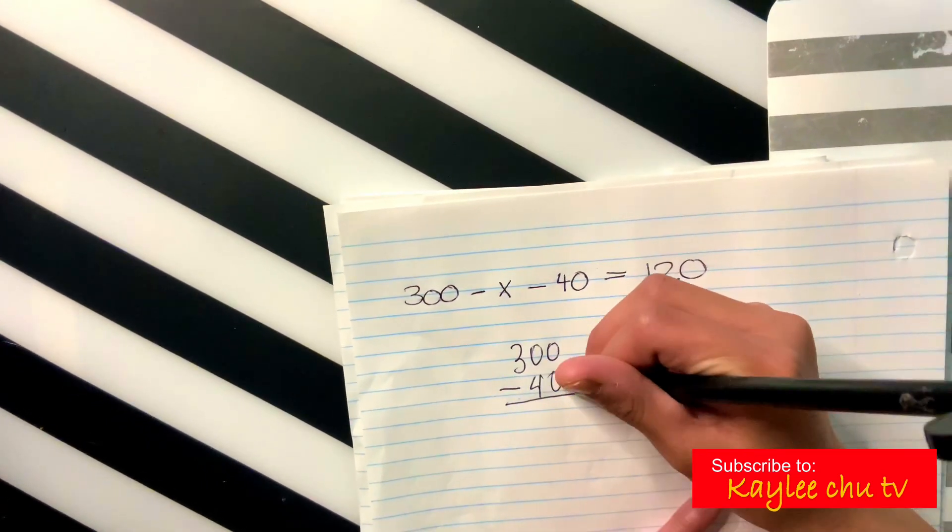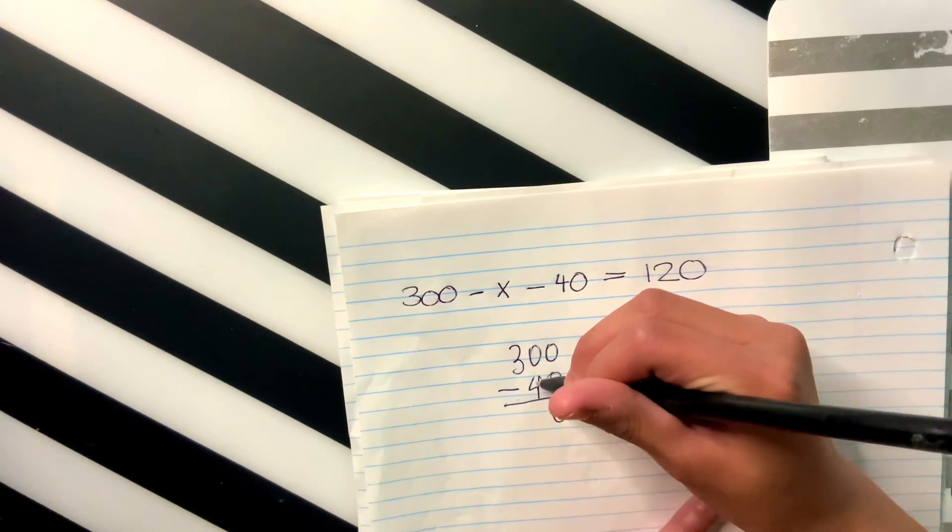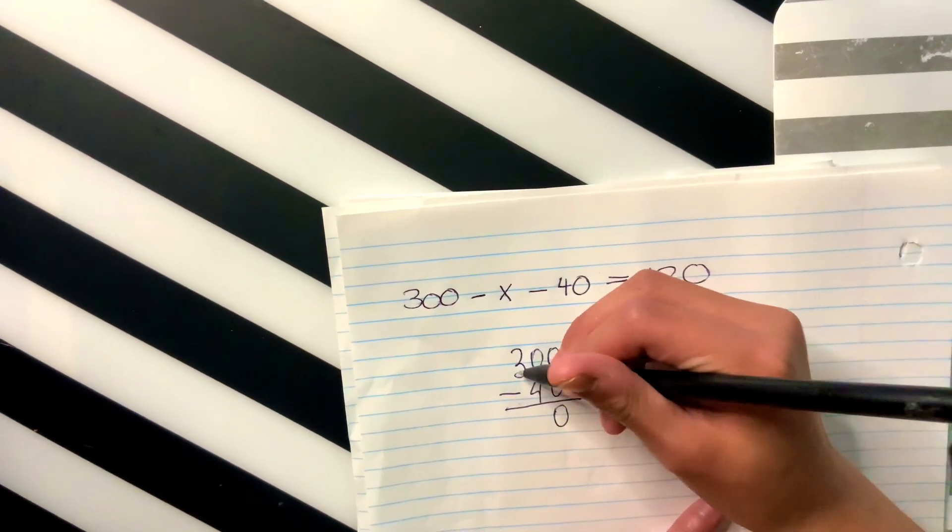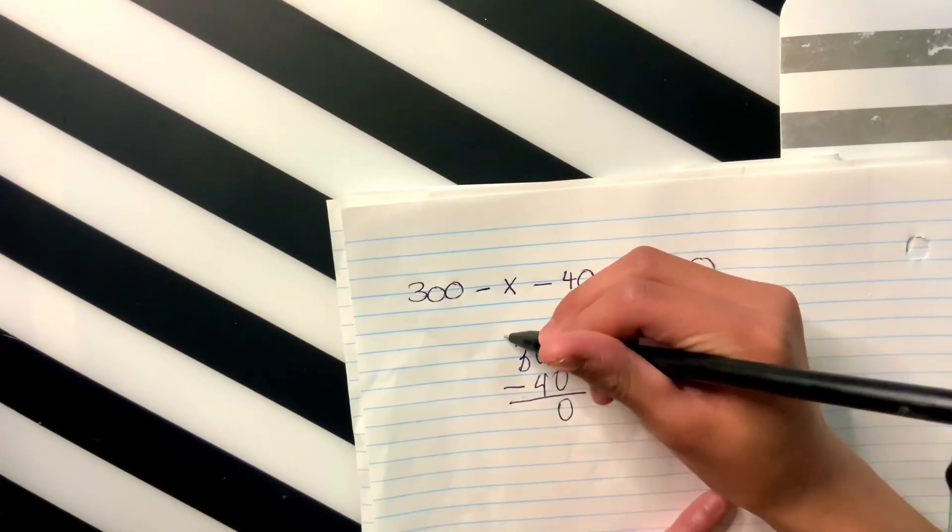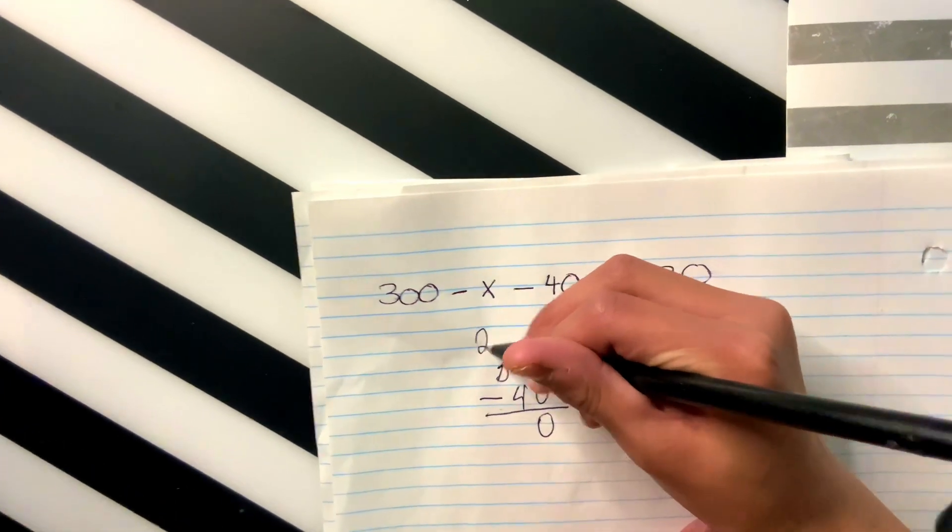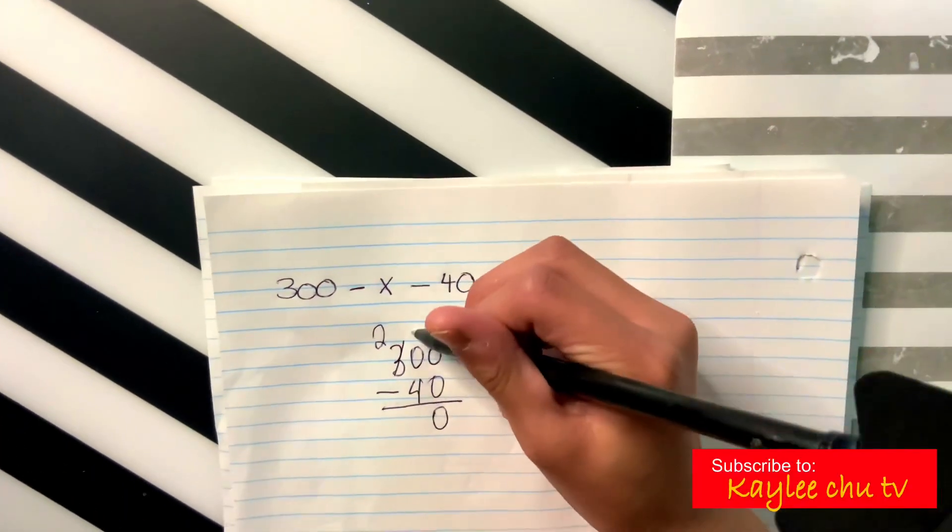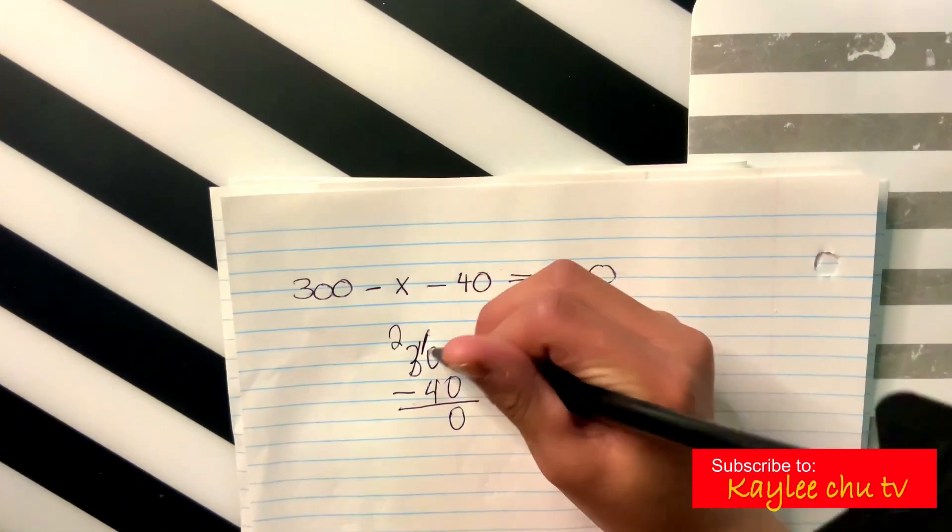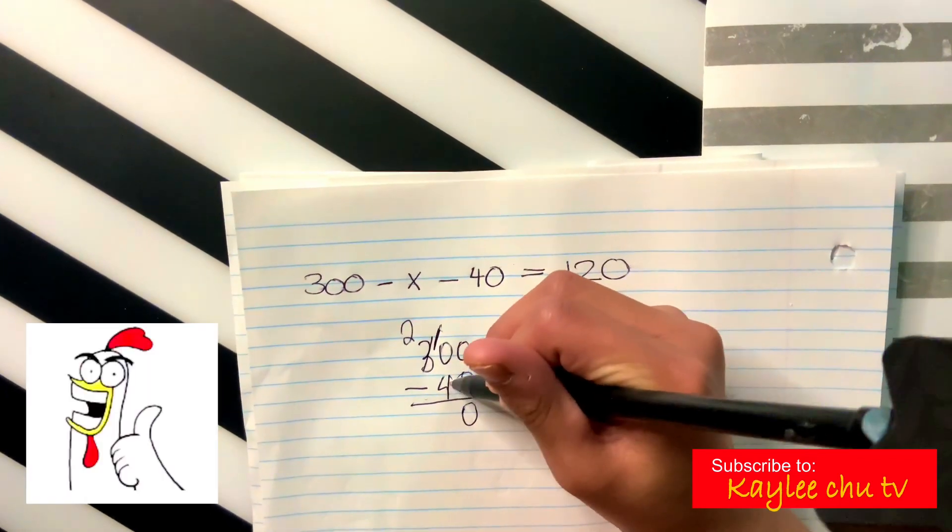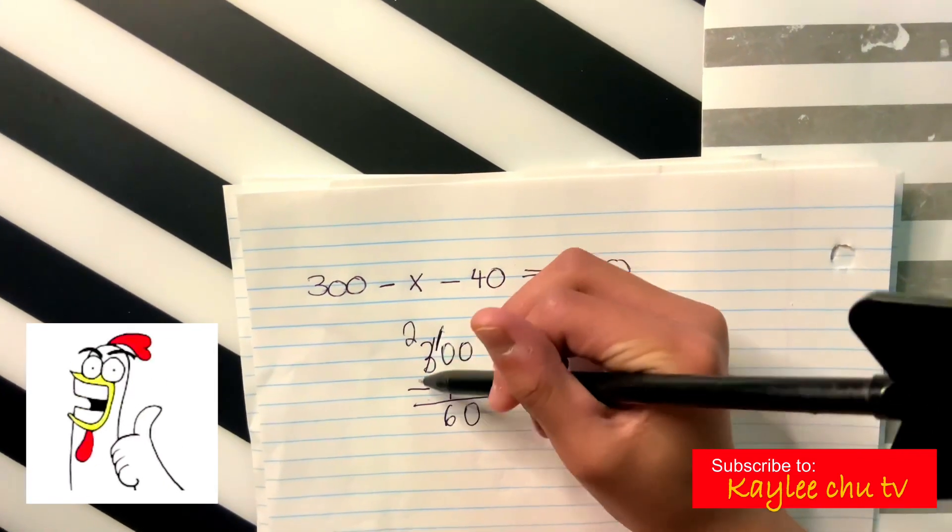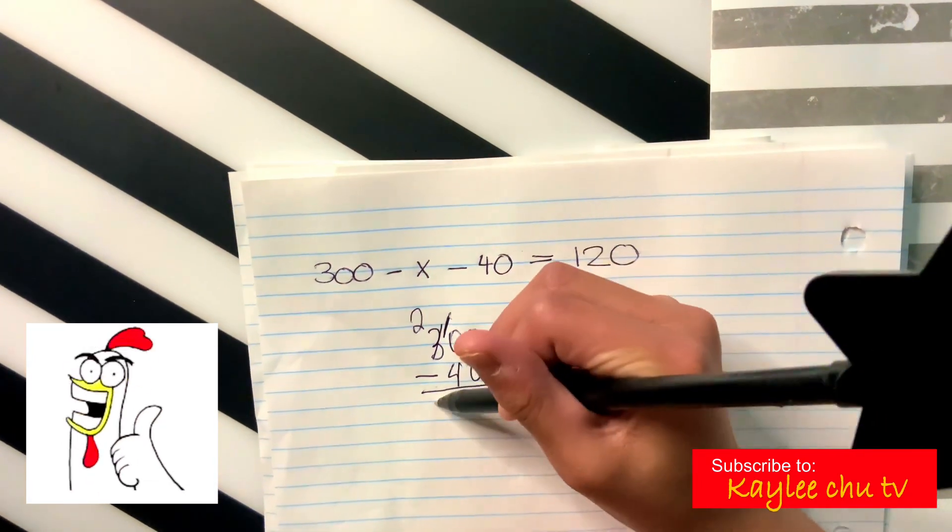So 0 minus 0 is 0. 0 minus 4, you can't do. So you're going to borrow from the neighbor. Just cross that out. 3, it'll turn into 2 since you're only borrowing 1. Then 1 goes here. It'll turn into 10. 10 minus 4 is 6. And 2 minus 0 will basically be 2.